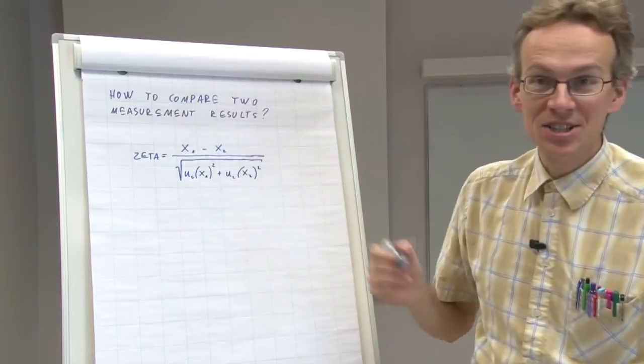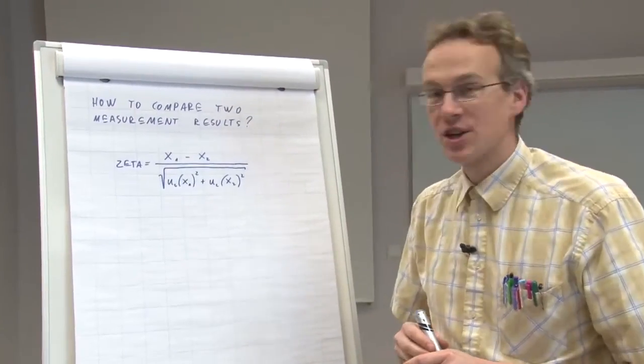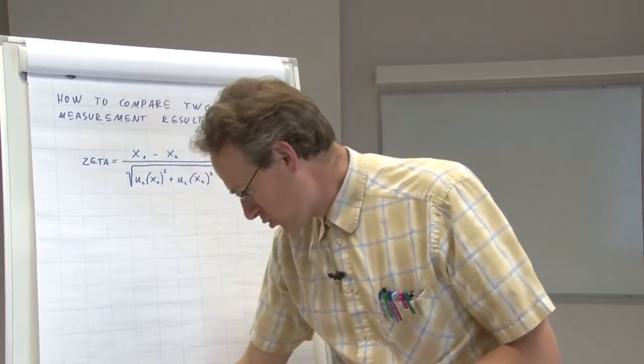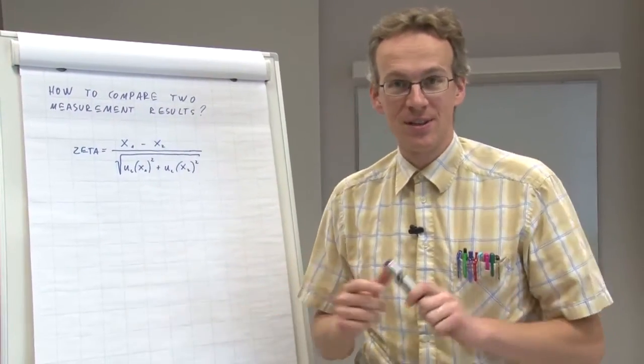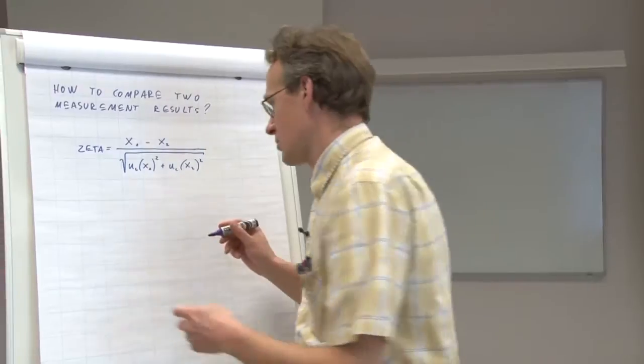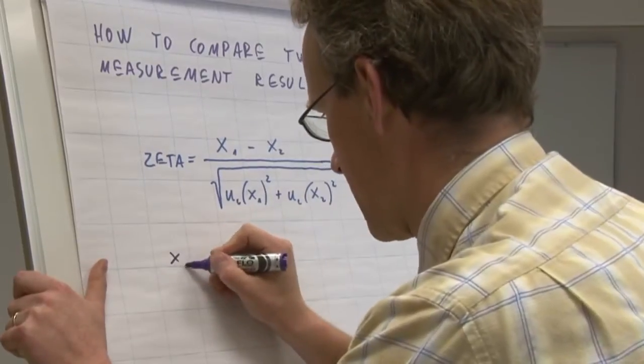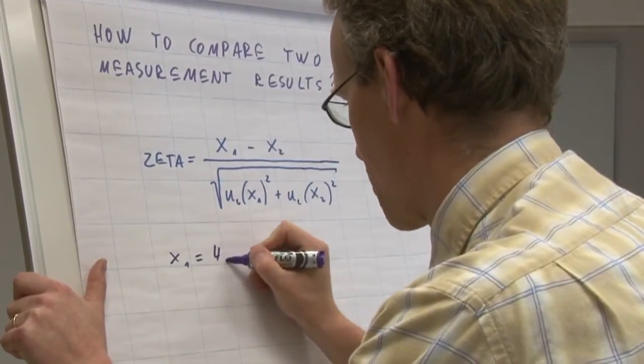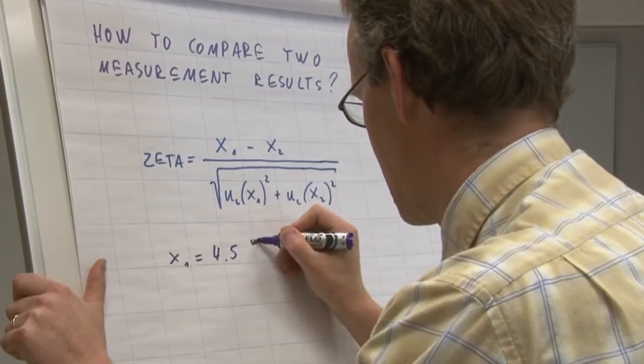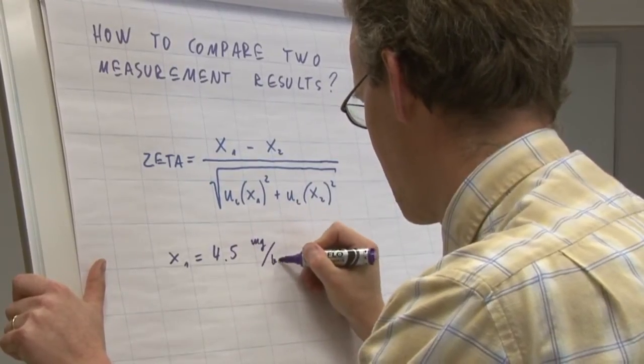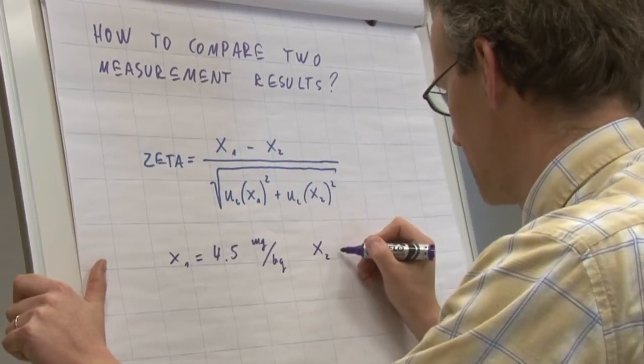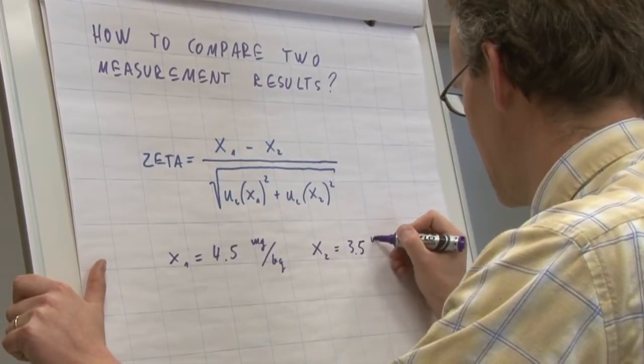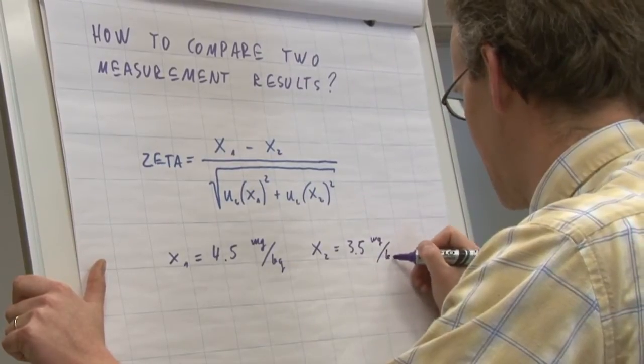Let's see how this works in reality. Suppose we have two different measurement results: x1 equals 4.5 milligrams per kilogram and x2 equals 3.5 milligrams per kilogram.